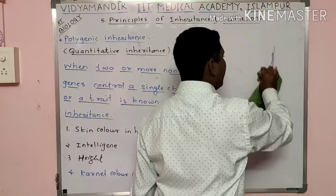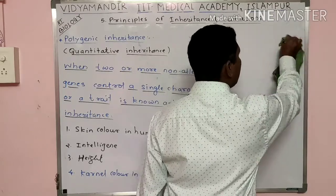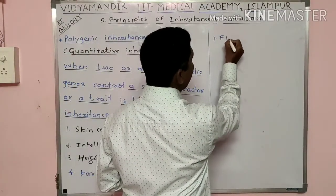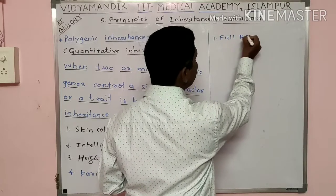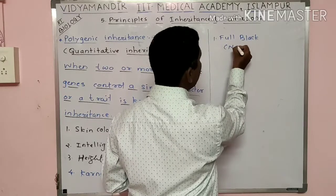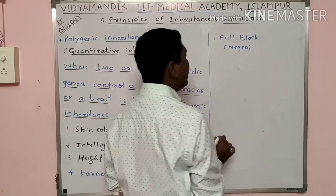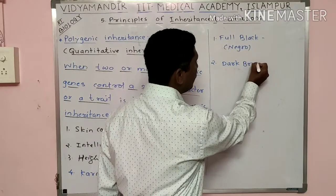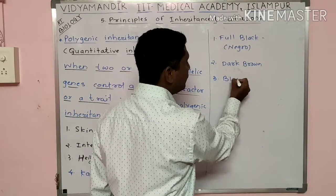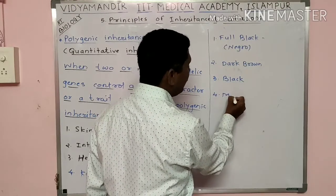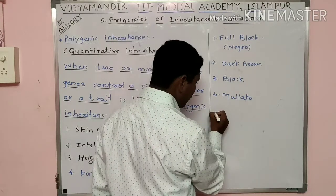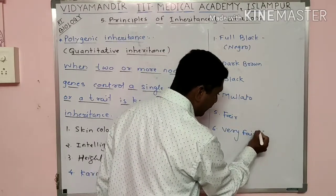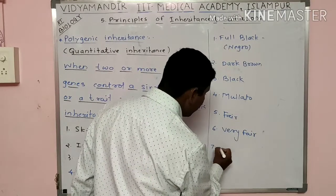The variants in skin color of humans are: (1) full black or negro, (2) dark brown, (3) black color, (4) mulatto, (5) fair, (6) very fair, and (7) albino.